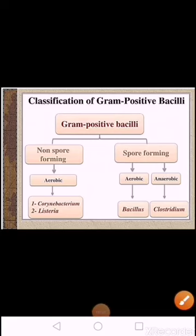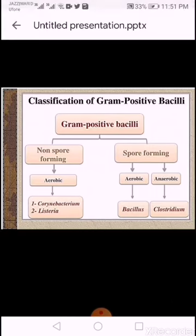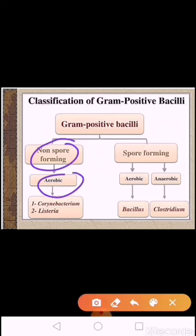For classification of gram-positive rods, the easiest approach is to first identify spore-forming bacteria. There are two genera: Bacillus and Clostridium. Bacillus anthracis produces anthrax. Both are spore-forming, and Clostridium is the only obligate anaerobe in this classification. Non-spore-forming bacteria are all aerobic, with examples including Corynebacterium diphtheriae and Listeria.